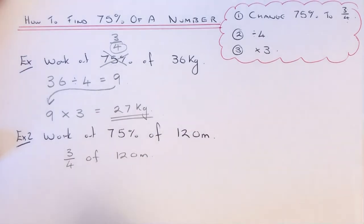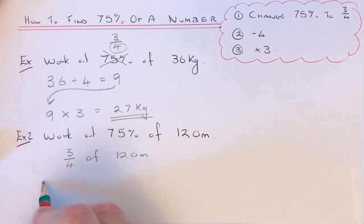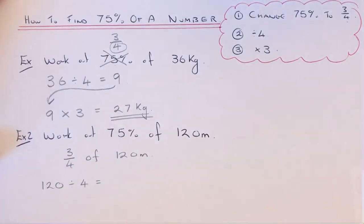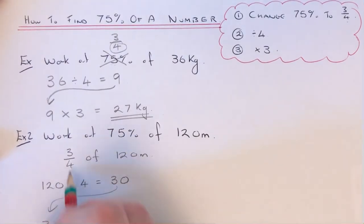Again, we just need to divide by the bottom, times by the top. Put 120 on the next line, divide by the bottom number which is four. So 120 divided by four—well, 12 divided by four is three, then just put the zero on. Put that on the next line, so we've got 30. Then we times it by the top number three.